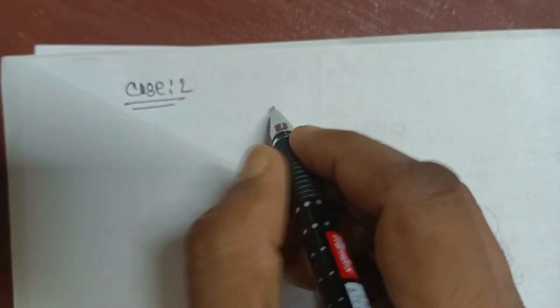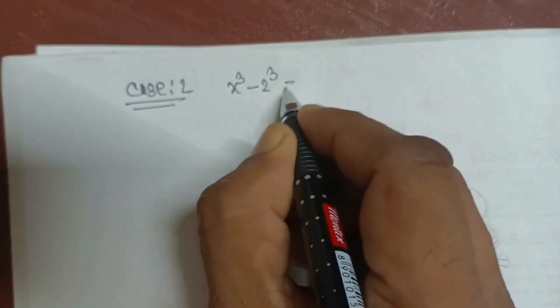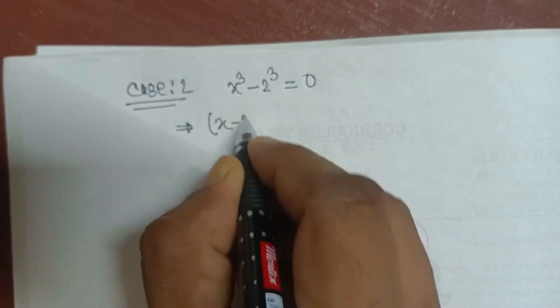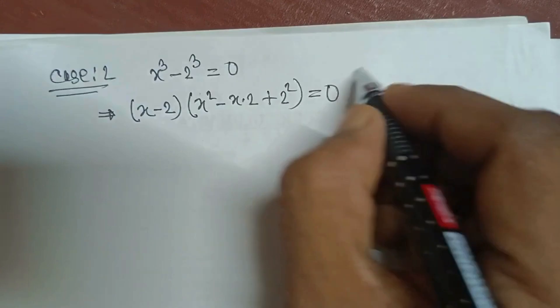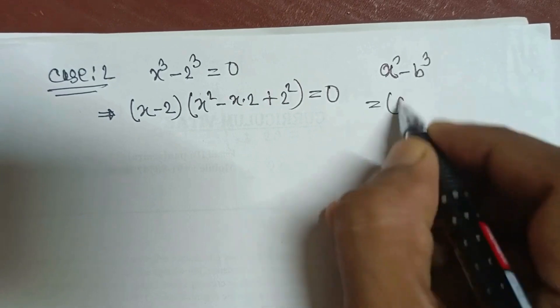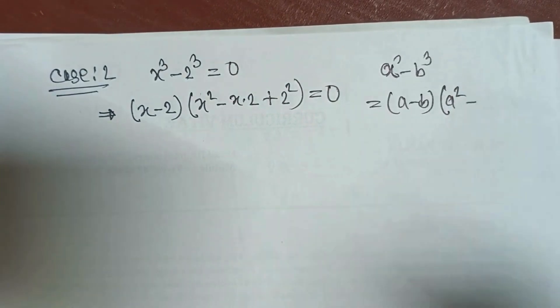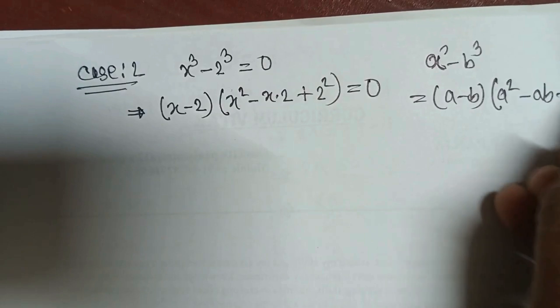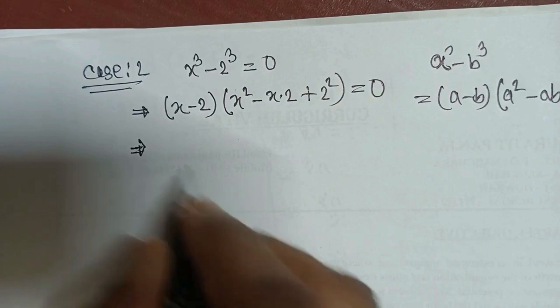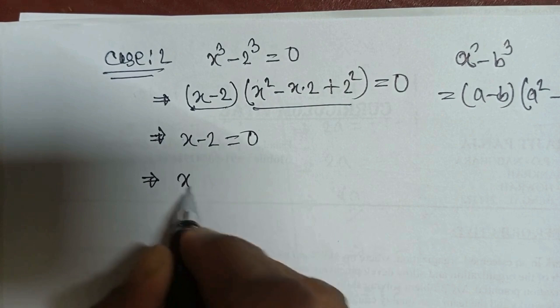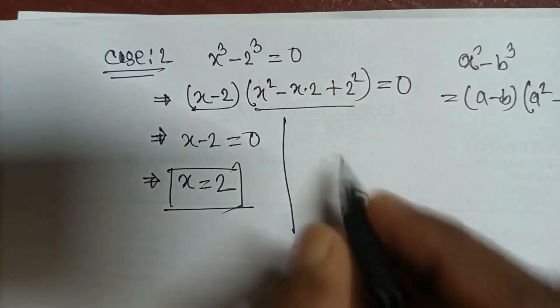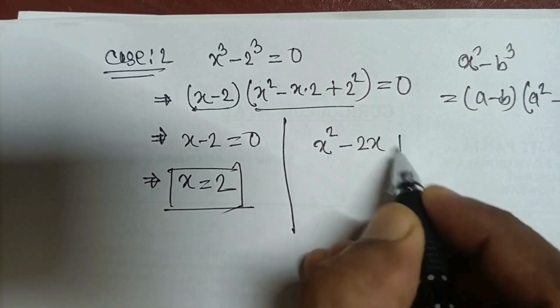For case 2, x cubed minus 2 cubed equals 0. Using the formula a cubed minus b cubed equals a minus b into a squared plus ab plus b squared, we get x minus 2 into x squared plus 2x plus 4 equals 0. Therefore either x minus 2 equals 0, giving x equals 2.